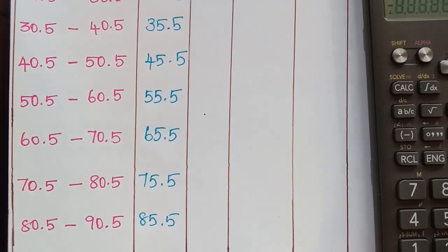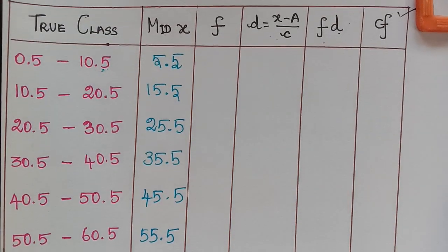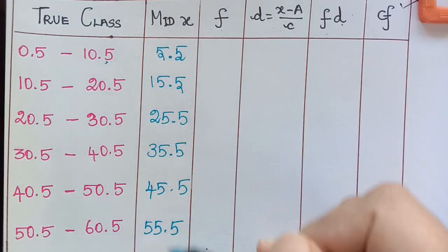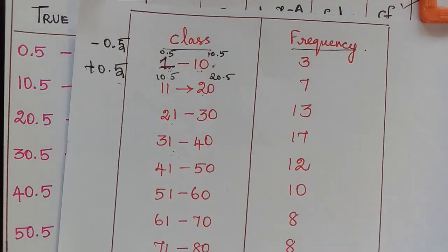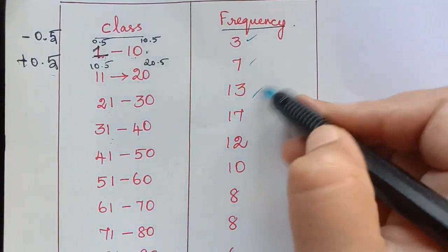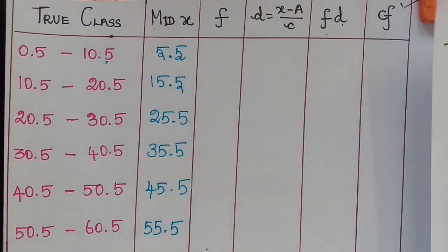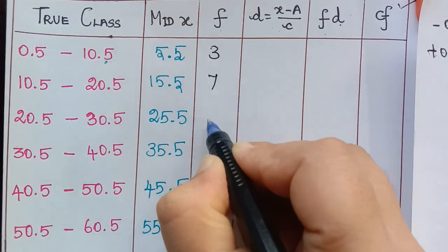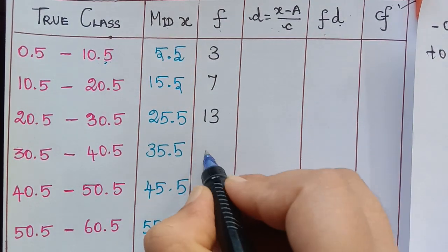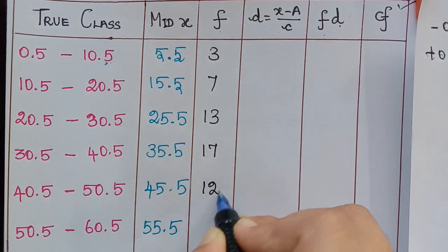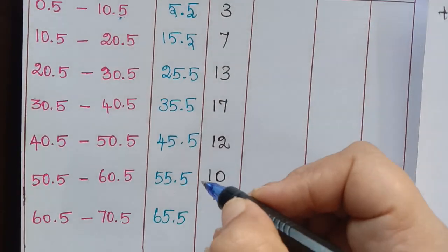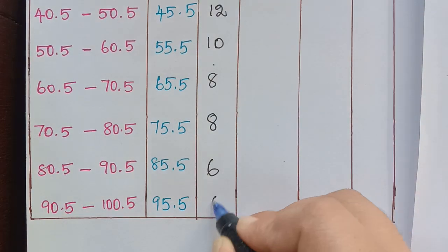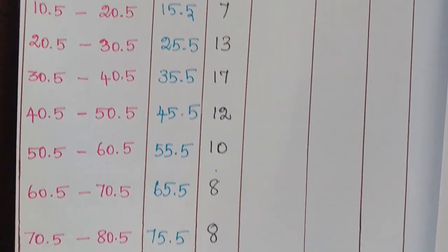After finding the mid values, we take the frequencies given in the question and write them in the corresponding column: 3, 7, 13, 17, 12, 10, 8, 8, 6, and 6. These are the frequencies as given in the question.